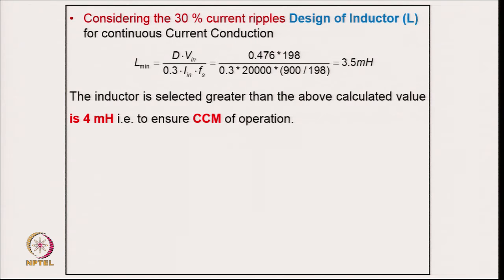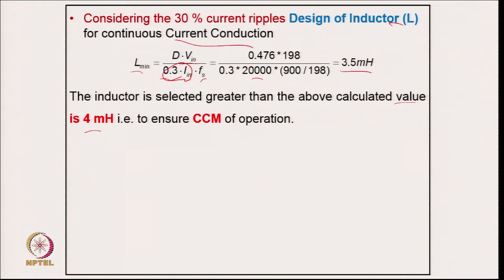Considering 30 percent current ripple for inductor design in continuous conduction mode, the inductor value is calculated from the relation L = D × V_in / (ΔI × f_s). With a switching frequency of 20 kHz, the calculated value is 3.5 mH. The inductor is selected as 4 mH, greater than the calculated value, to ensure continuous conduction mode over a wide operating range of supply voltage and load.